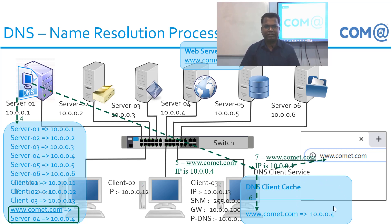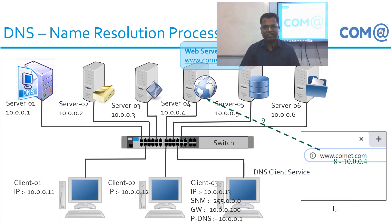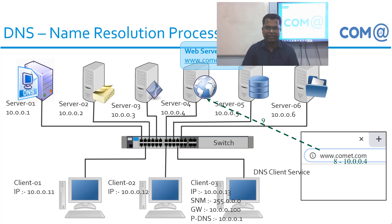Now the requesting application has the IP address of the destination name and can communicate directly with the destination server. This is how the name resolution process works. For troubleshooting, when trying to access an application from a client machine and the destination is not accessible, the first step is to clear the DNS Client Cache. After clearing the cache, try to access the destination using the name again. You can also manually verify whether the requested name is available in the cache or not. You can clear the cache using the command ipconfig /flushdns.